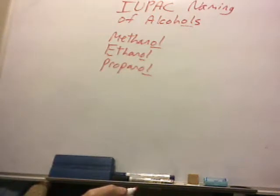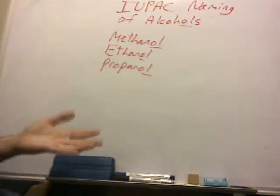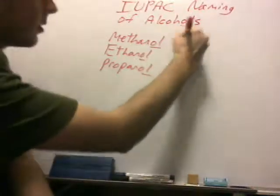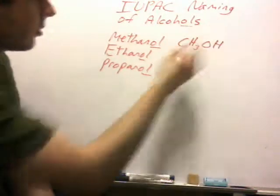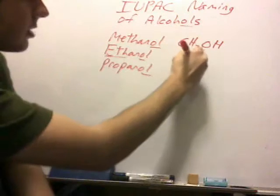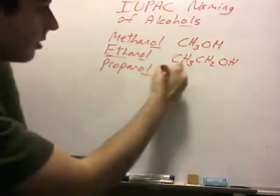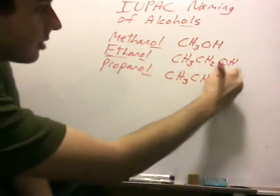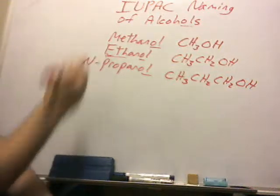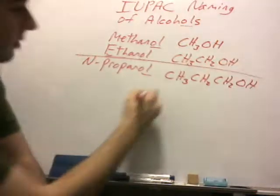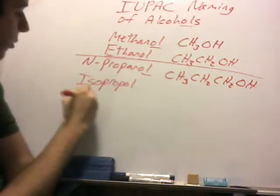Again, you follow the same nomenclature that we did last time: meth, eth, prop, but, pent, hex, hept, oct, non, dec, and further on: undec, dodec. All alcohols are denoted by an OH group. So methanol would be CH3OH, whereas ethanol — the kind we drink — would be a two-carbon molecule: CH3CH2OH. Propanol is where you can have two different isomers. You can have CH3CH2CH2OH, sometimes called n-propanol. The other isomer is isopropyl, also seen as 2-propanol.